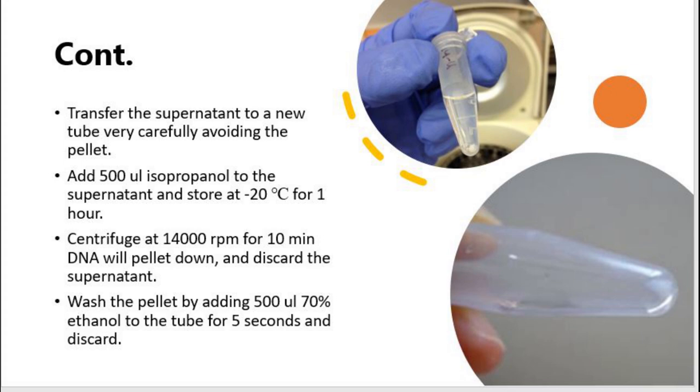After one hour, centrifuge the tube at 14,000 rpm for 10 minutes. DNA in the supernatant will pellet down as a small white pellet. Discard the supernatant and wash the DNA pellet by adding 500 microliter 70% ethanol to the tube.